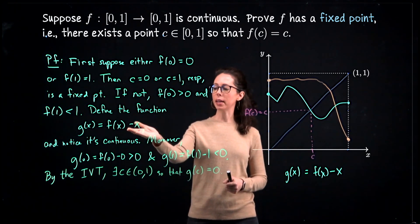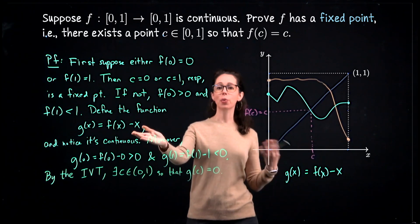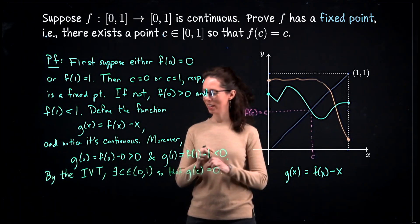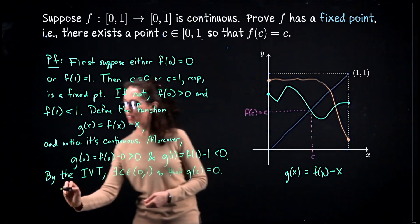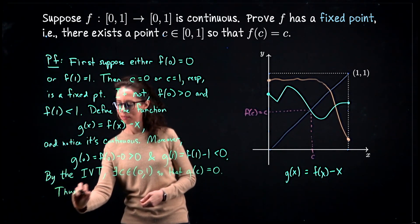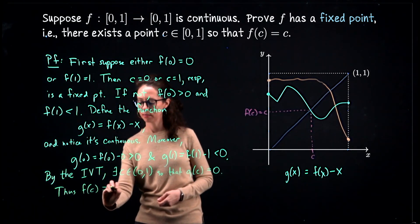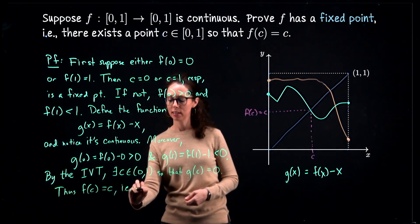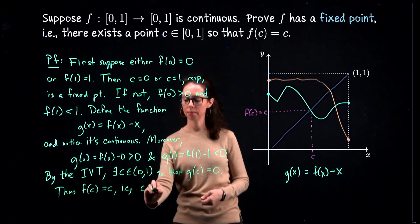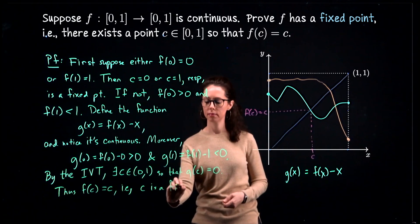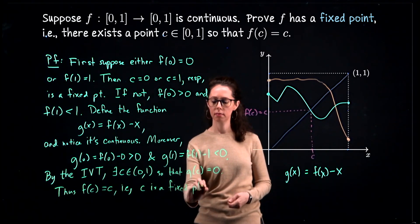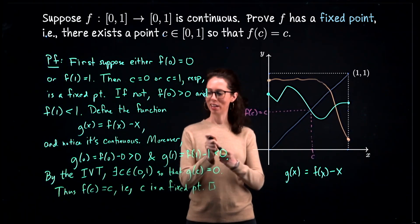Our conclusion follows right now from the Intermediate Value Theorem. By the IVT, there exists a c between zero and one, so that g(c) = 0. But if g(c) = 0, then f(c) - c = 0, so f(c) = c. Thus, i.e., c is a fixed point.